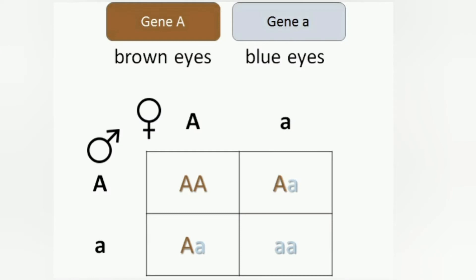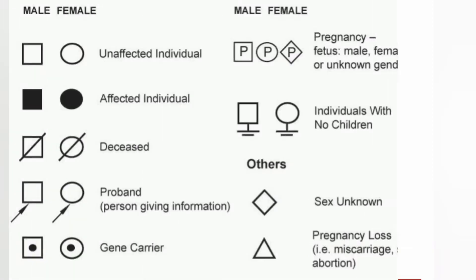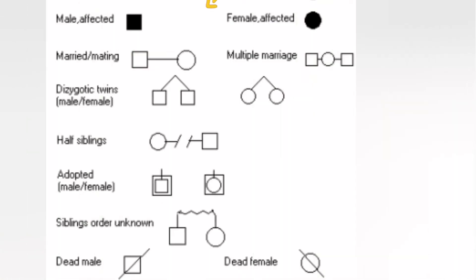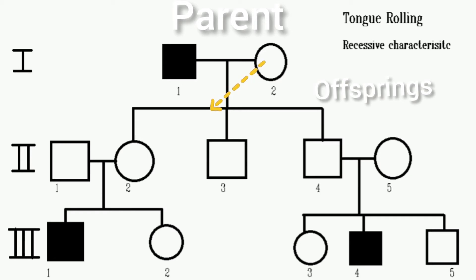The Mendelian concept of dominance of genes and segregation of characteristics in subsequent generations can be studied by this method. There are a few internationally approved symbols used in pedigree analysis. The square structure represents the male, the circle represents the female, and the rhombus-type structure is for sex unspecified. When these structures become colored or shaded, they represent affected individuals. A line between the square and circle shows mating, and lines drawn below represent parent generation on top and children below.